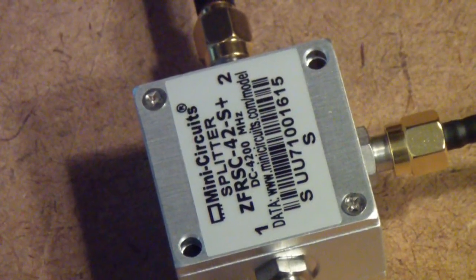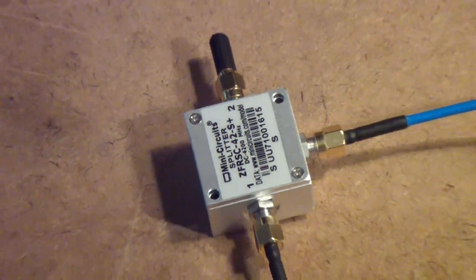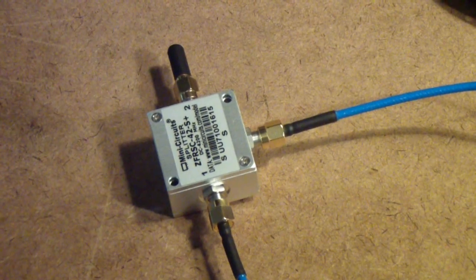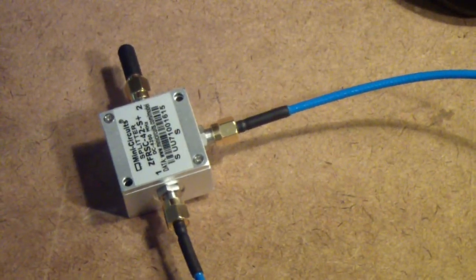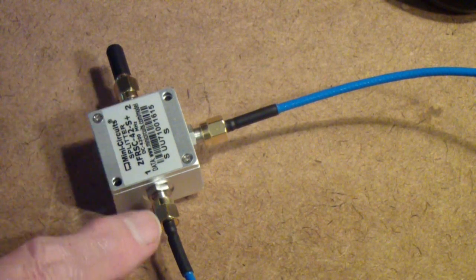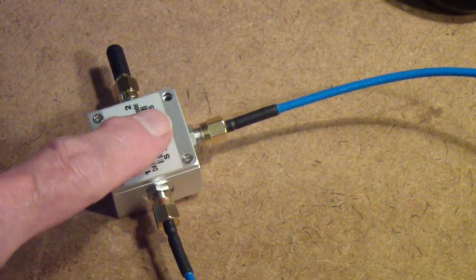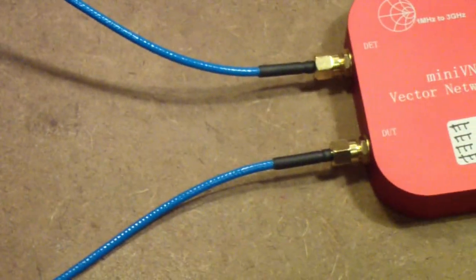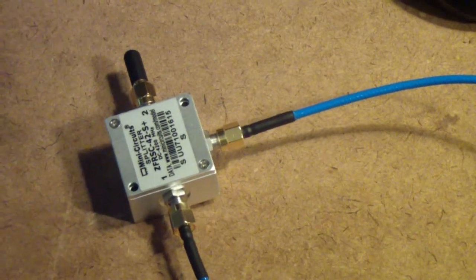Now, I've hooked up the splitter, and the Mini VNA Tiny, the DUT output, is connected to the S port, or the input port. Port 2 is terminated with a 50 ohm termination, and we are reading the transmission from S to port 1, which is connected to the other detector input on the Mini VNA Tiny.